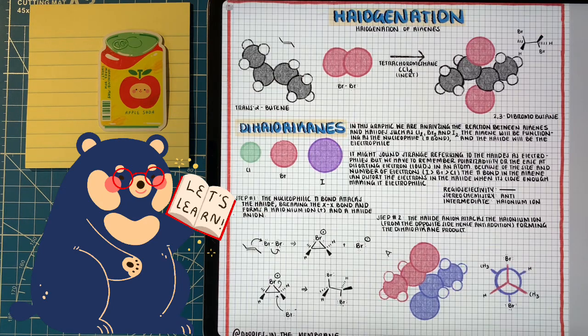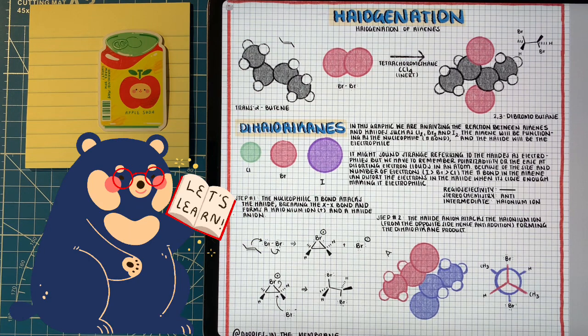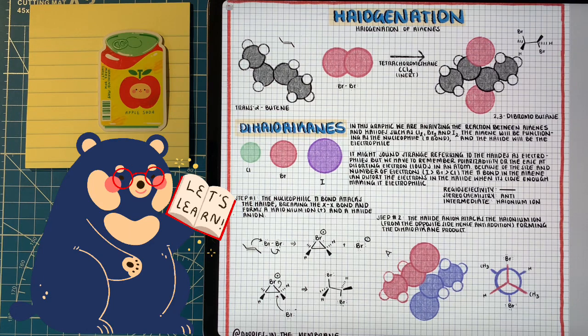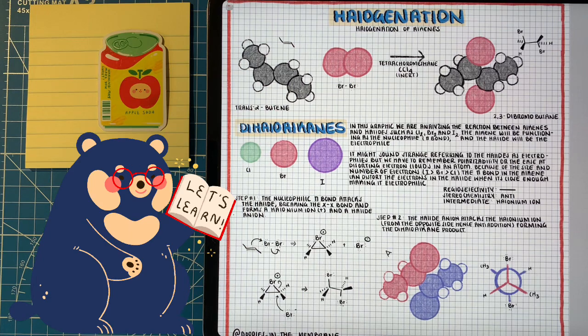Our first reaction we're going to look at, we're going to look at the halogenation of alkenes. Now I know this looks really similar to the hydrohalogenation of alkenes but in this case we're not dealing with hydrogen halides, we're just dealing with halides such as bromine, chlorine or iodine. Now this reaction is done in inert solvents and the regioselectivity doesn't really matter since we will be adding two of the same groups onto the double bond carbons.